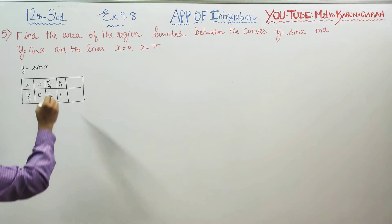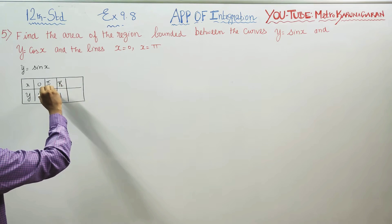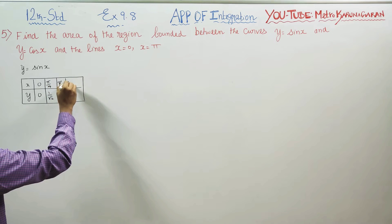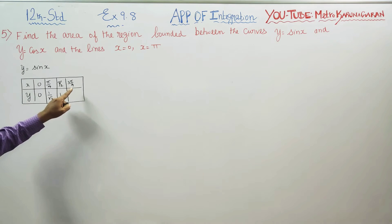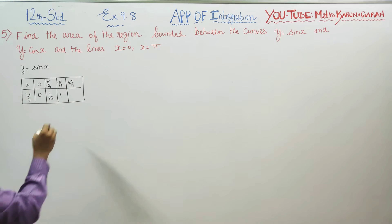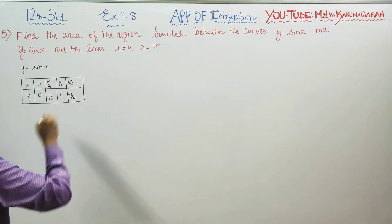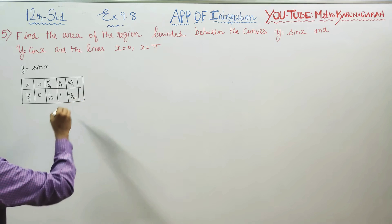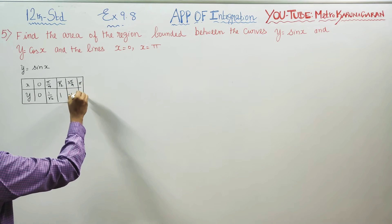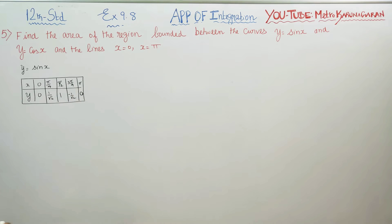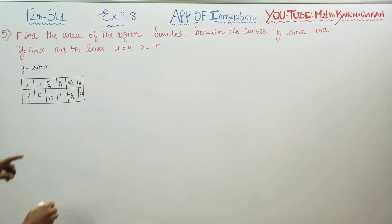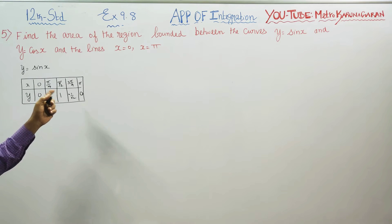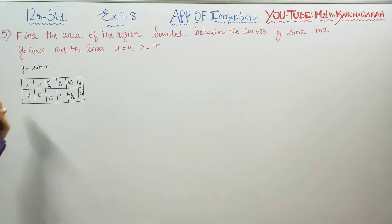At x = 135° (which is 3π/4), since π/4 = 45° and 45 × 3 = 135°, sin 135 = sin(2×90 − 45). The second quadrant is positive, so sin 135 = 1/√2. At x = π (180°), sin π = 0. These are the values of sine.